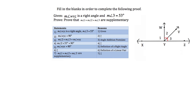Fill in the blanks to complete the following proof. Given that measure angle WYZ is a right angle and measure angle 3 equals 53 degrees, prove that measure angle 1 plus measure angle 2 plus measure angle 3 are supplementary. Let's fill in what we know on the diagram — angle WYZ is marked as a right angle, and measure angle 3 equals 53 degrees.